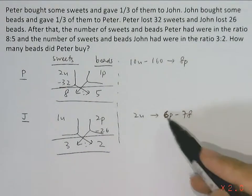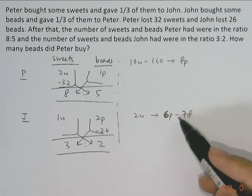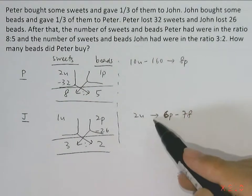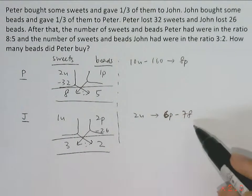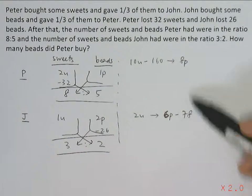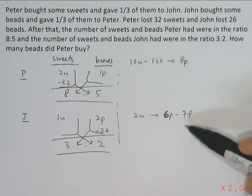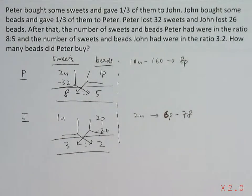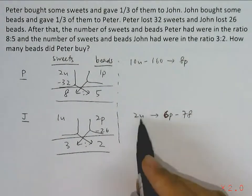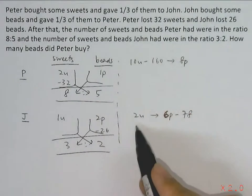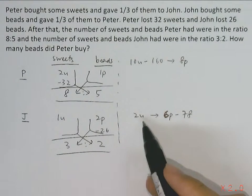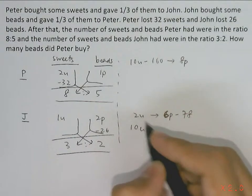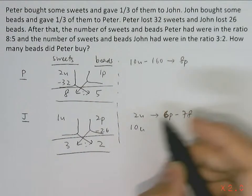We have two pieces of information and want to eliminate one unknown. Since we have 2 units and 10 units, the lowest common multiple of 2 and 10 is 10, so we multiply the second equation by 5.